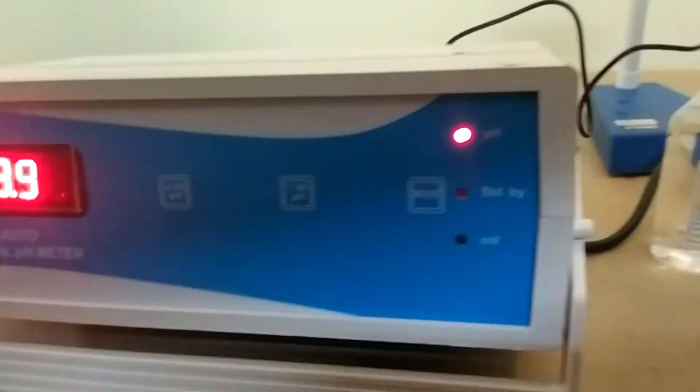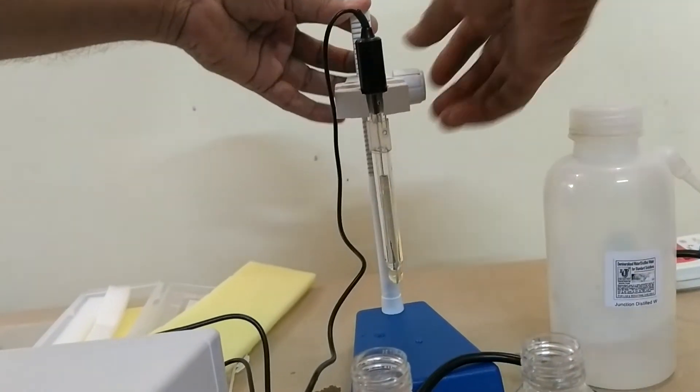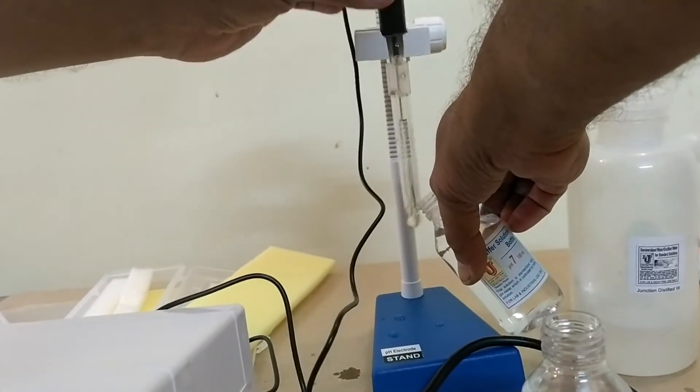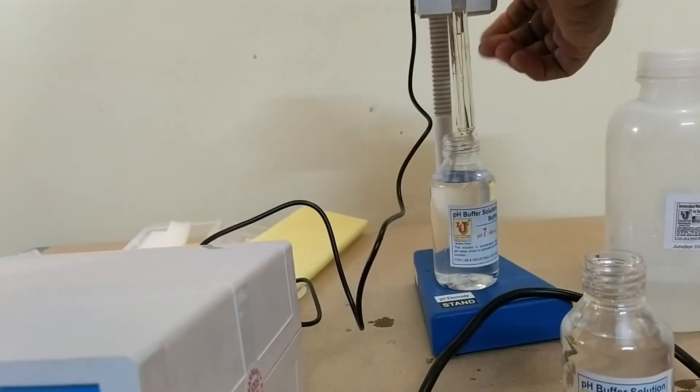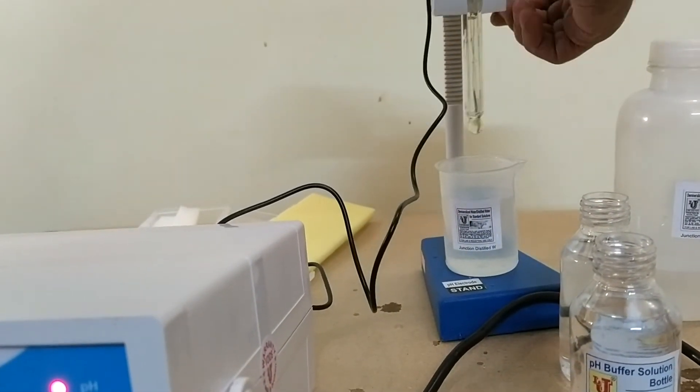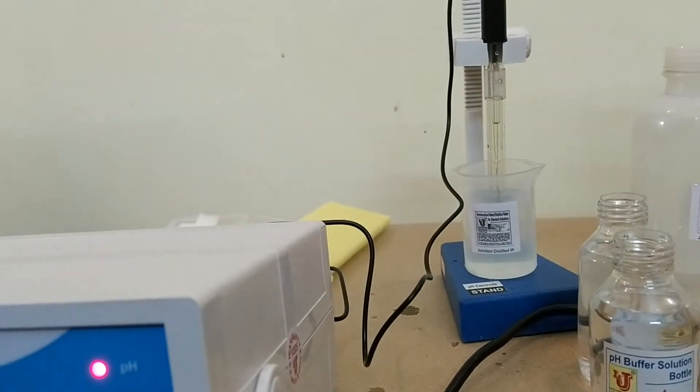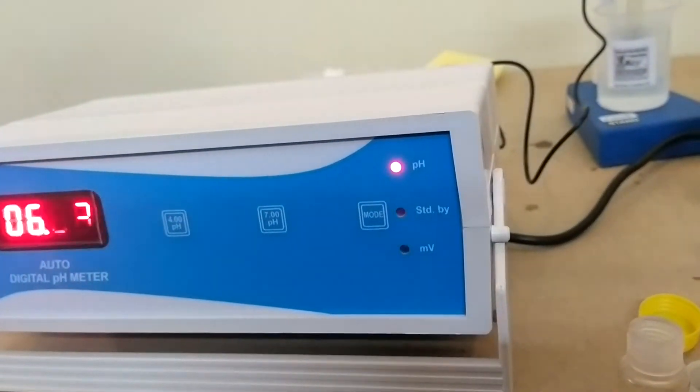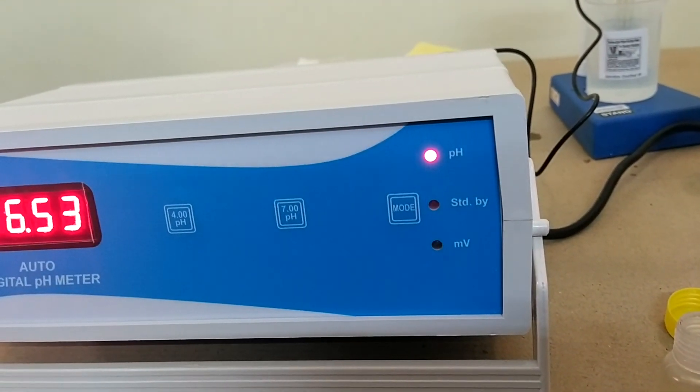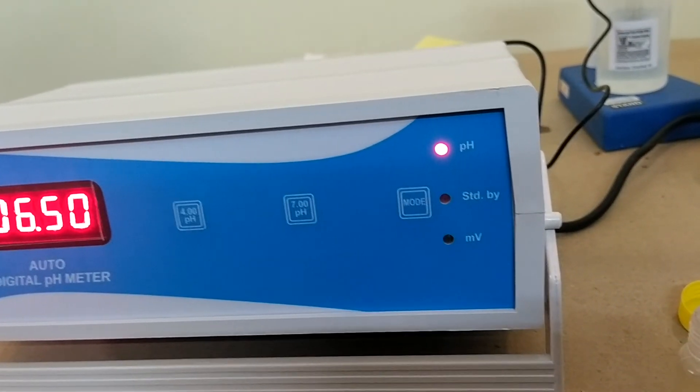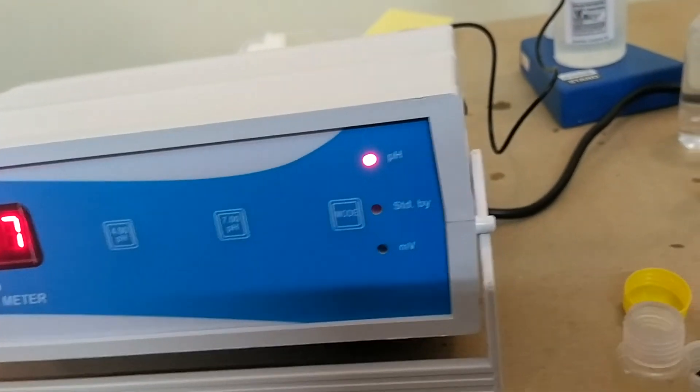This is the final calibration of pH meter. Now always keep pH electrode in this condition. This is also right in 7 pH. This is the final calibration and analysis of Lab Junction auto-digital pH meter. If you see this ramification and installation and if you got helpful, please subscribe my channel LabJunction. Thanks.